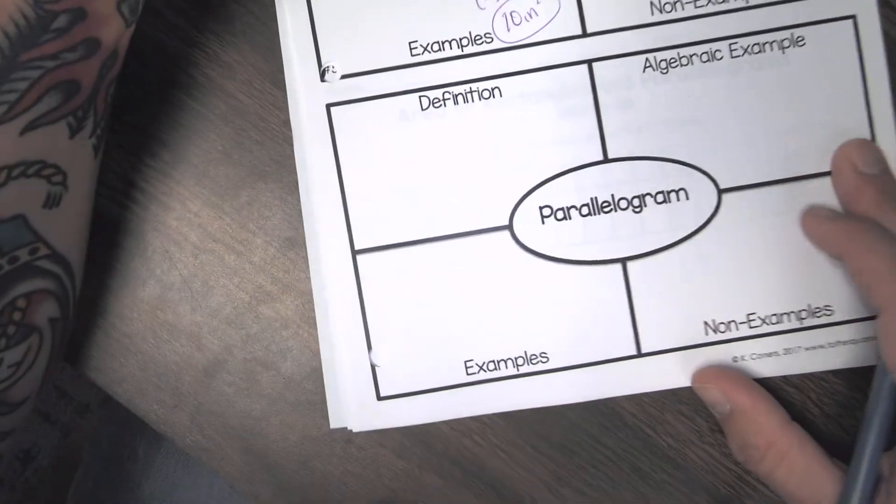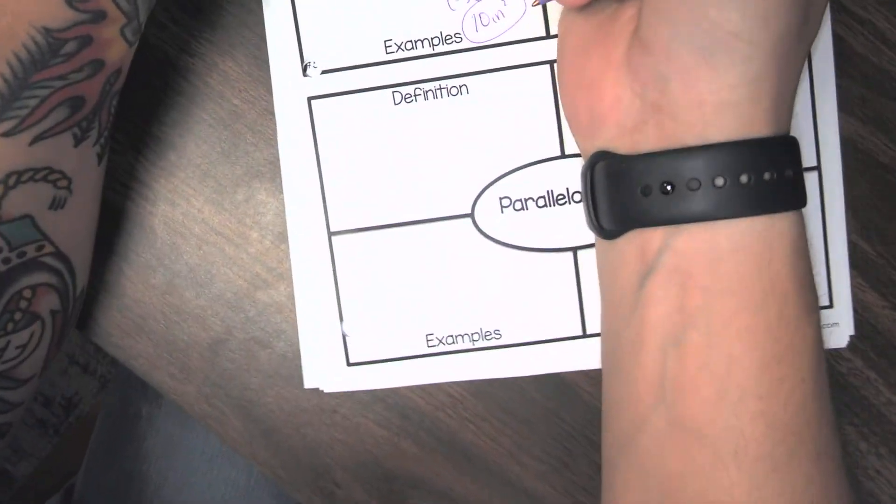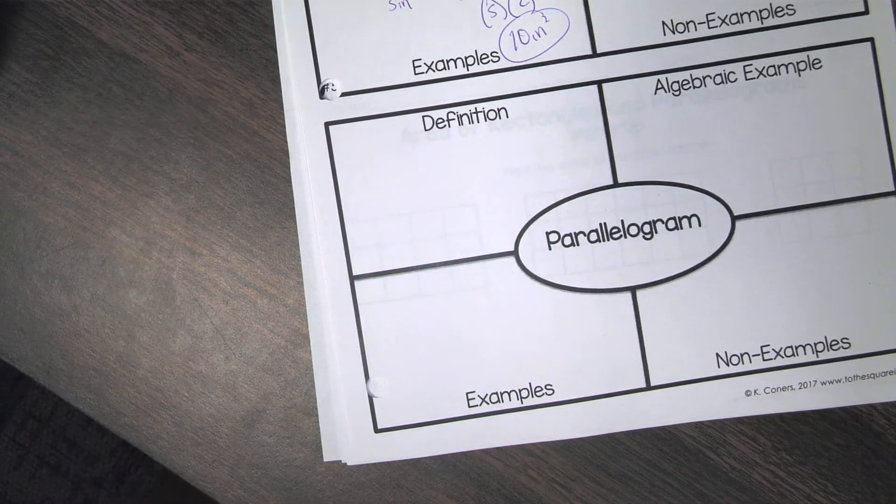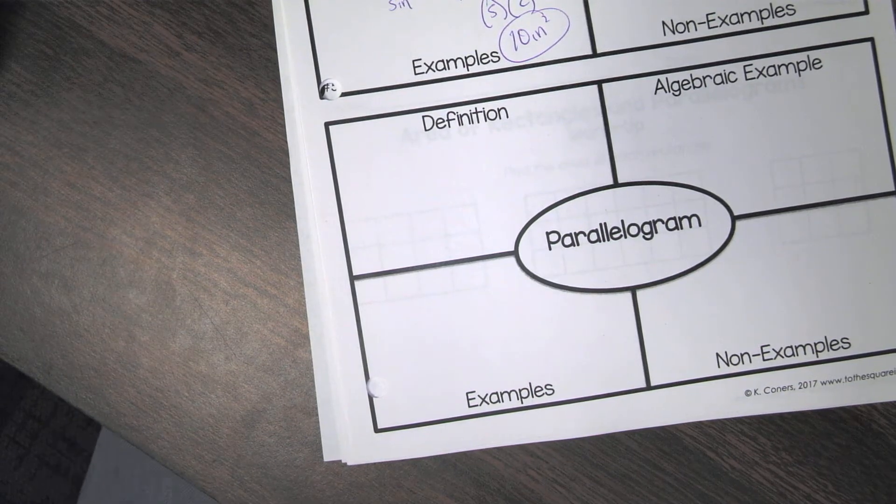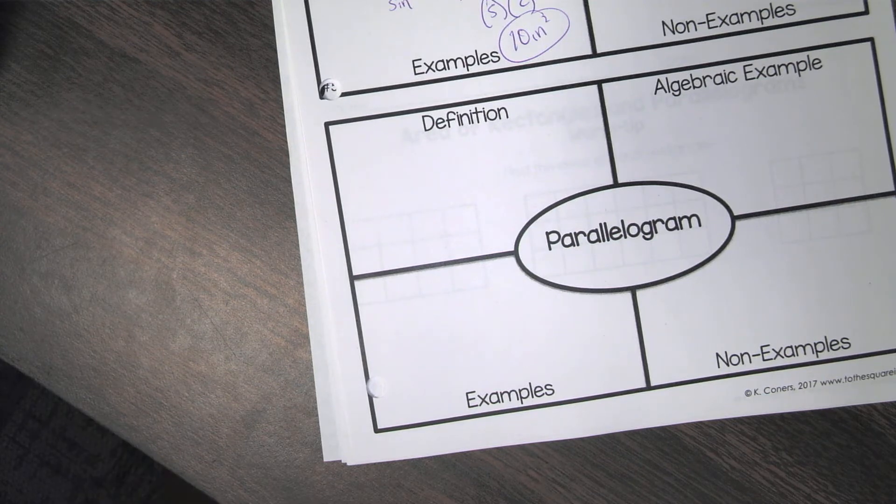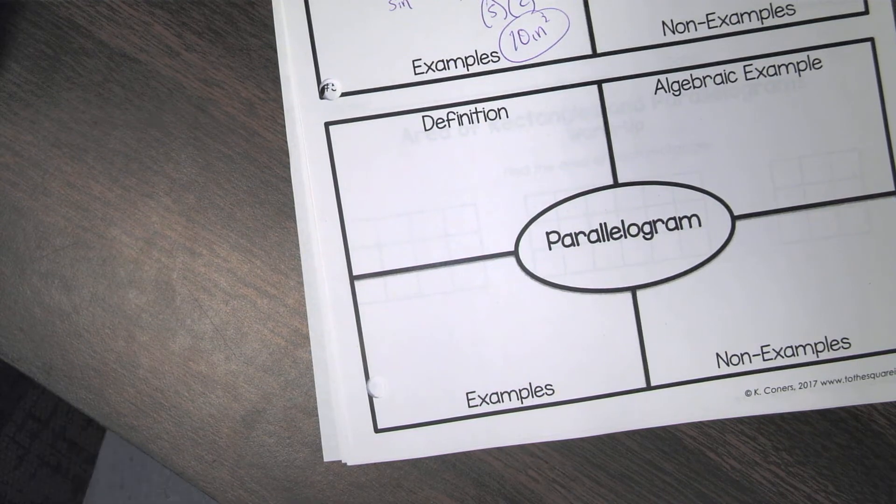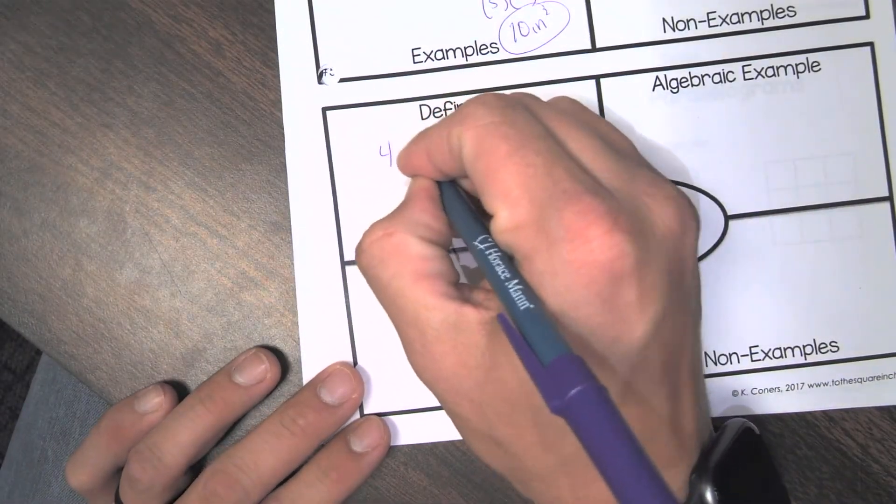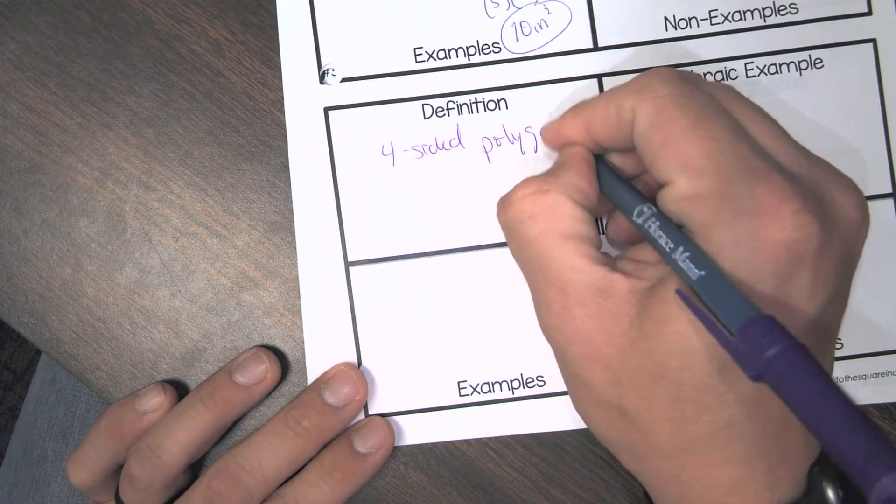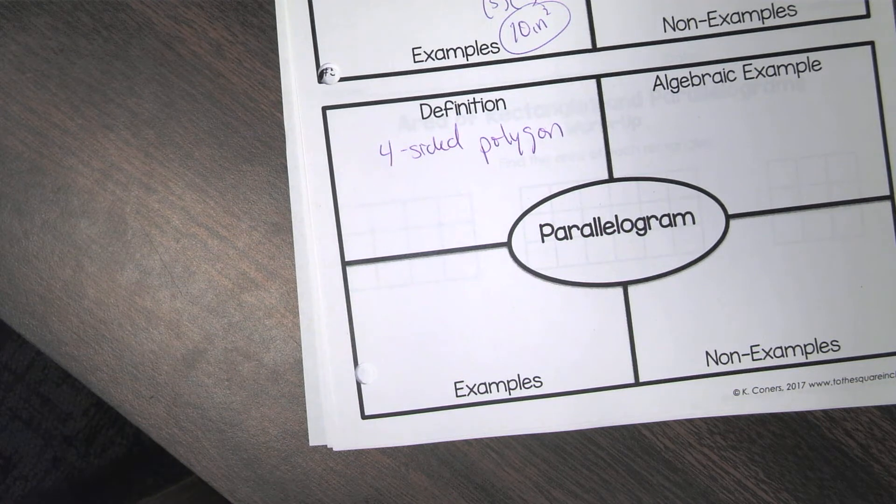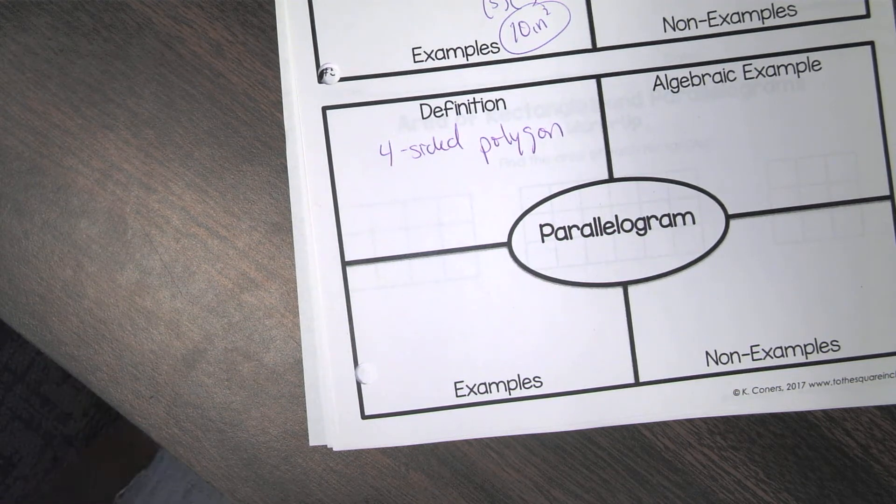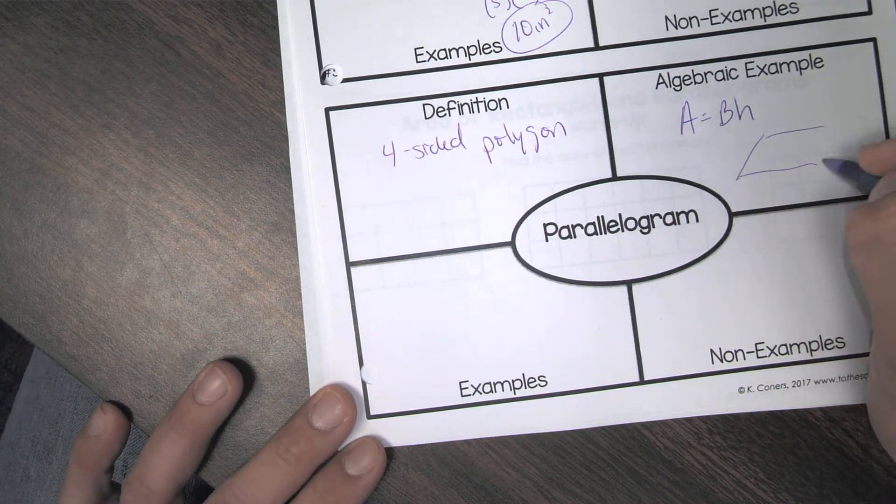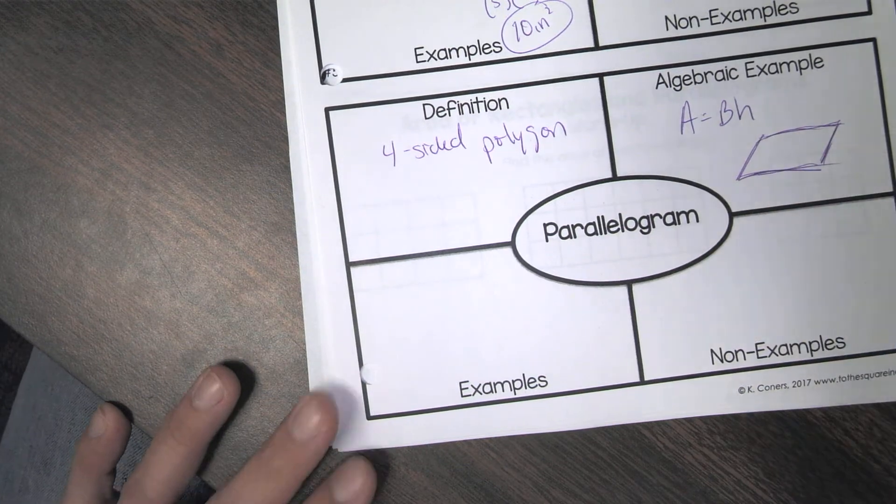Now, let's talk about parallelogram. So parallelogram, does anybody have, or think they know the definition of parallelogram? Well, that's the area. Define the parallelogram. So the parallelogram is just a four-sided polygon. That's it. It's a four-sided polygon. Four-sided figure. An algebraic example would be the formula again. You could draw one if you want to.